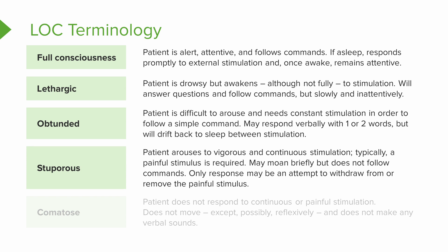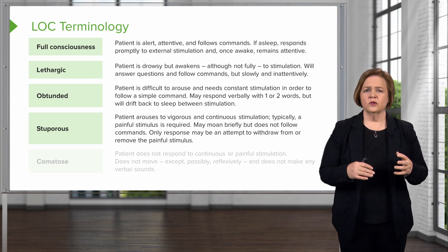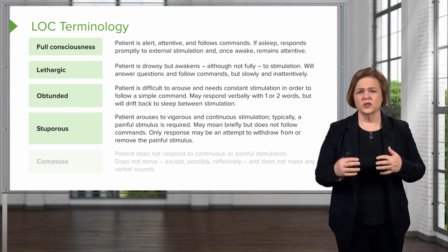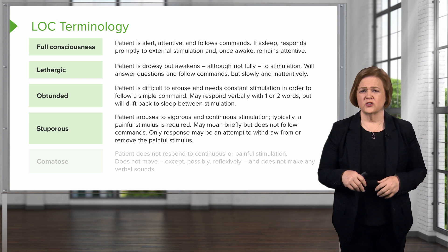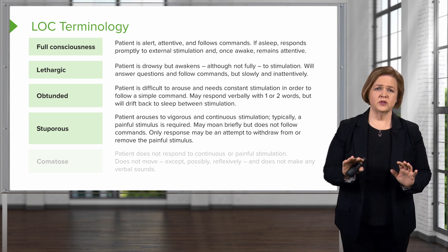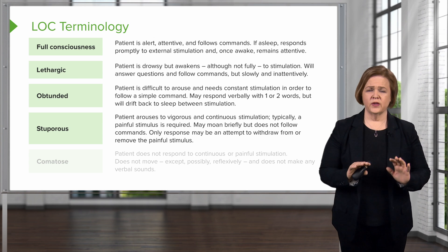Now, stuporous takes vigorous and continuous stimulation. Typically a painful stimulus is required. So we've gone from fully awake and alert, to lethargic and drowsy, to obtunded where you keep falling asleep, to stuporous which requires constant painful stimulation. The patient might moan briefly but doesn't follow commands — they only respond by attempting to withdraw from the pain. In obtunded you respond verbally with one or two words; in stuporous they won't follow commands, they might just try to pull away from the painful stimulus.